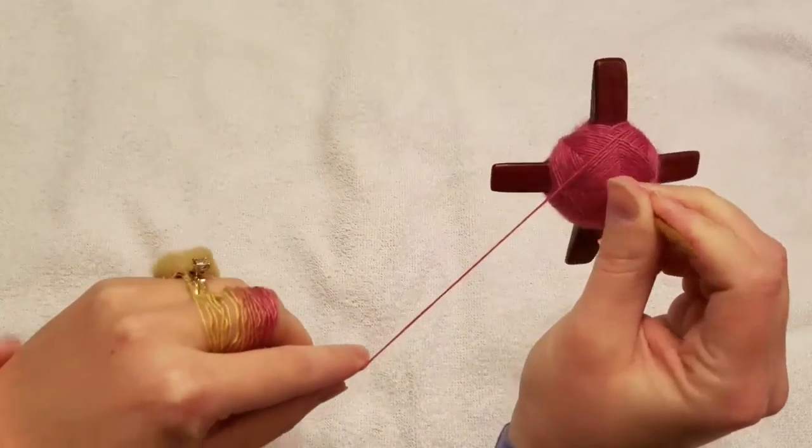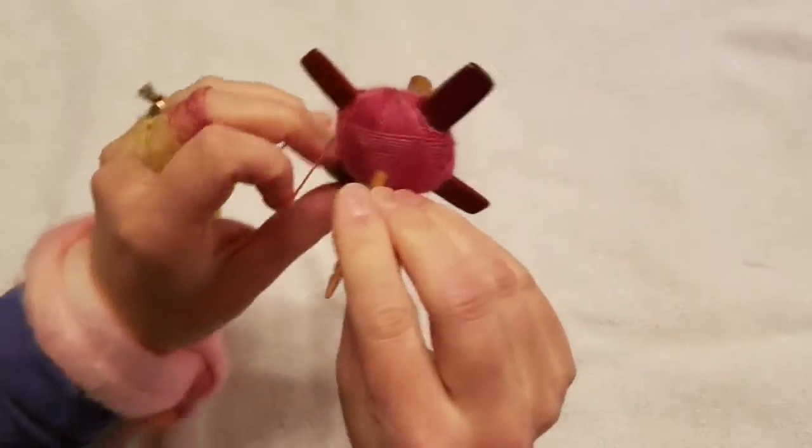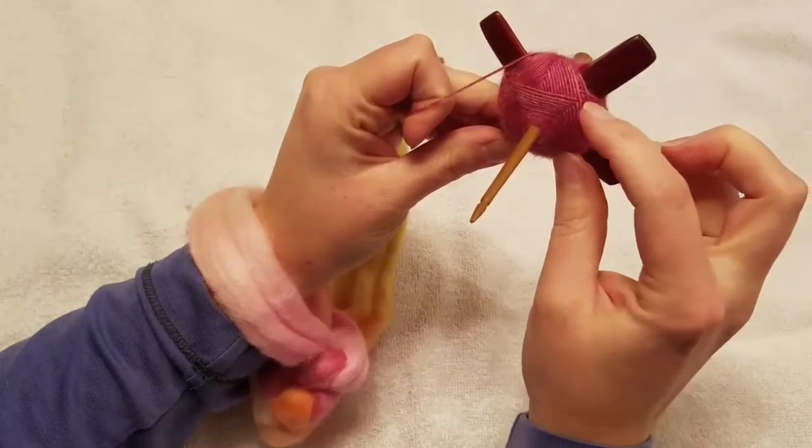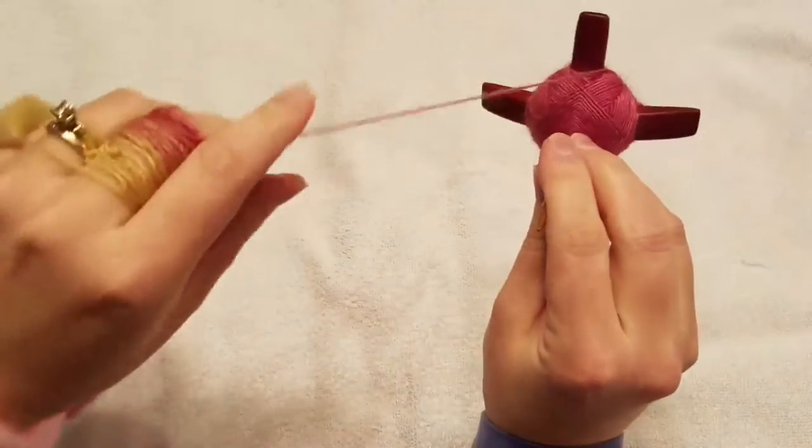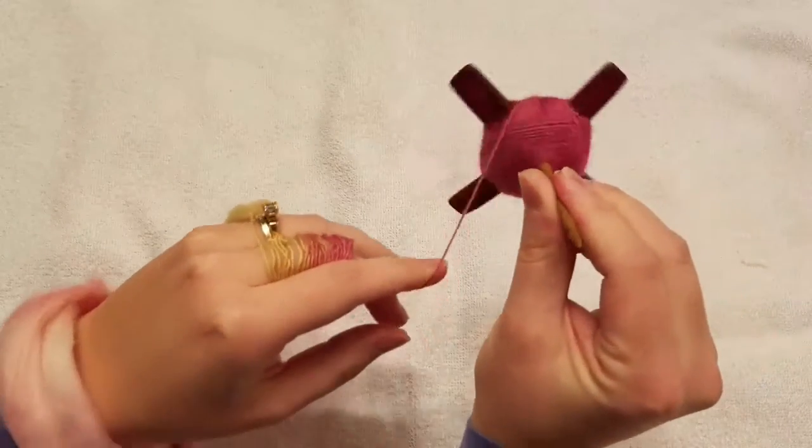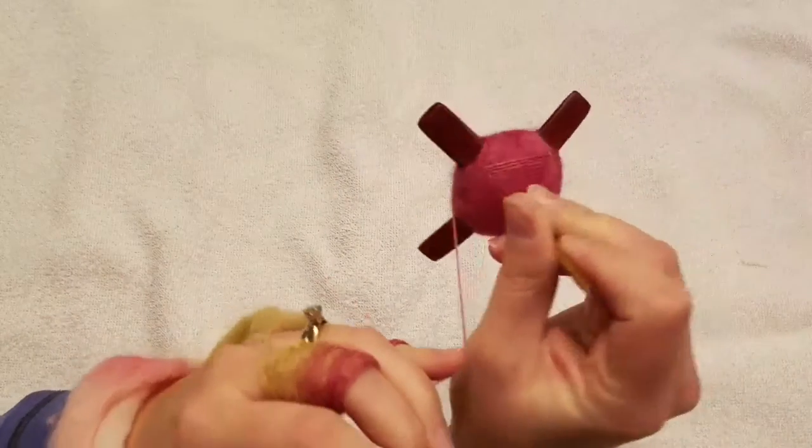You can see we're getting closer to covering up the previous layer, which is right here. Here's where my current layer stops. It's probably only two or three more wraps around each side, and then I will have completely covered the layer that came before it.